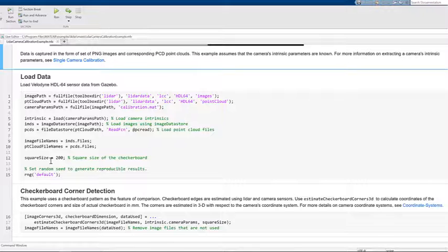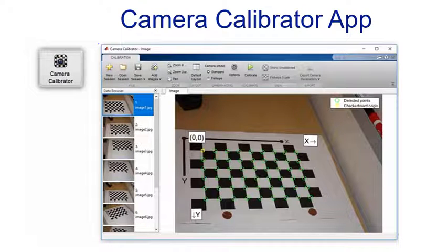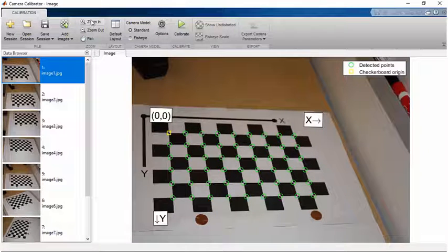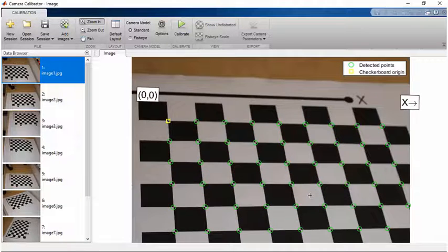Next we will load the intrinsic parameters of the camera. Intrinsic parameters define the internal characteristics of the camera such as focal length, optical center and lens distortion coefficient. We can use MATLAB's Camera Calibrator app to extract intrinsic parameters of the camera. The Camera Calibrator app provides an easy and interactive interface for camera calibration.